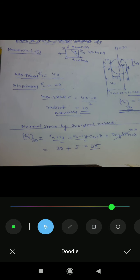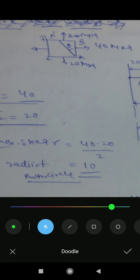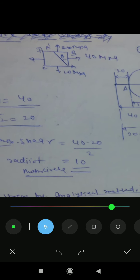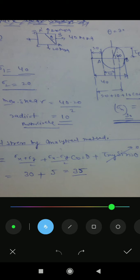Now I am going to tell you the difference between the analytical and the graphical method. This is the problem: we have an element with 40 MPa on one face and 20 MPa on another, with an inclined plane at angle theta equal to 30 degrees. We have to calculate the normal stress, the shear stress, and the principal stresses. First I will explain the graphical method, then the analytical method.